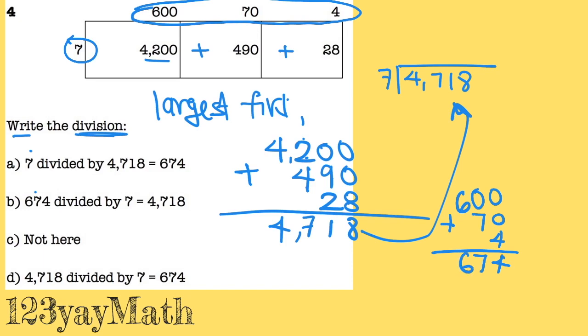And using the correct place value, you're going to write it as your quotient: 674. Don't write anything here, because this is the thousandths place.